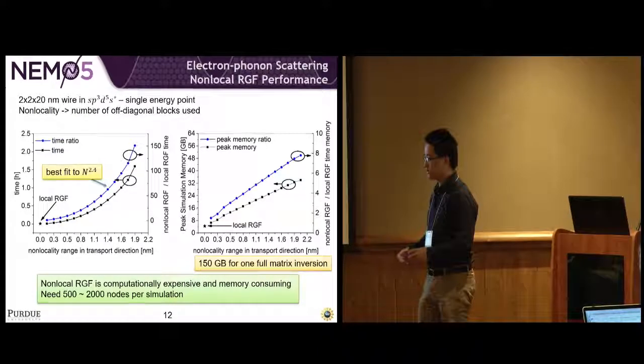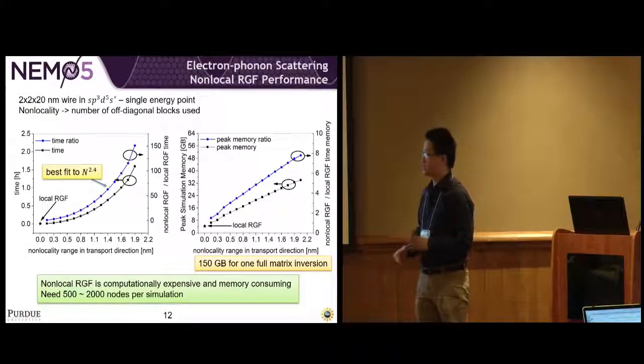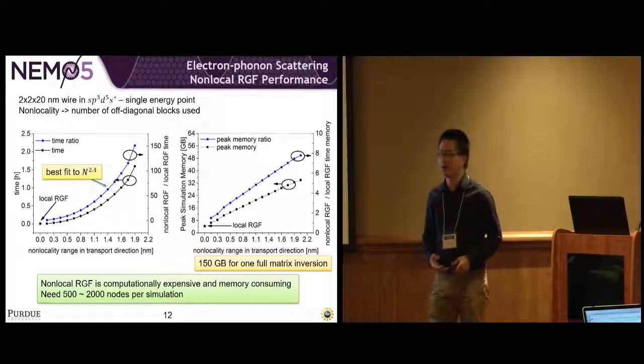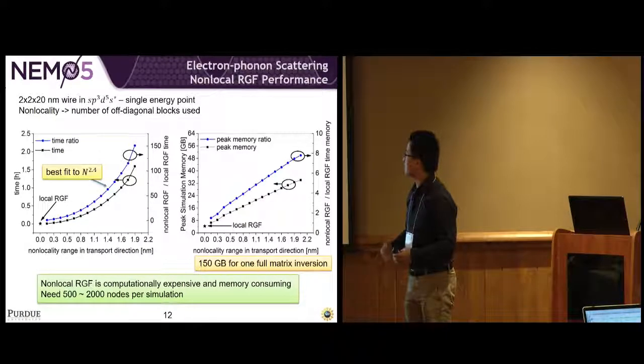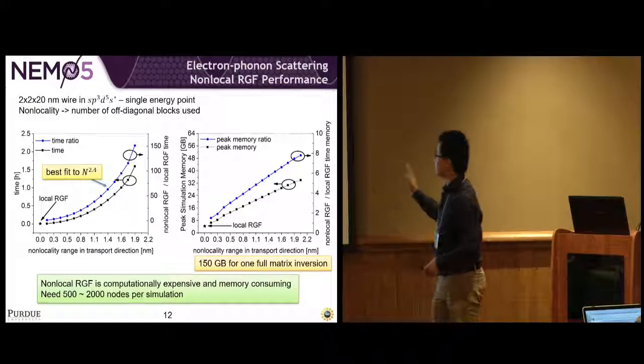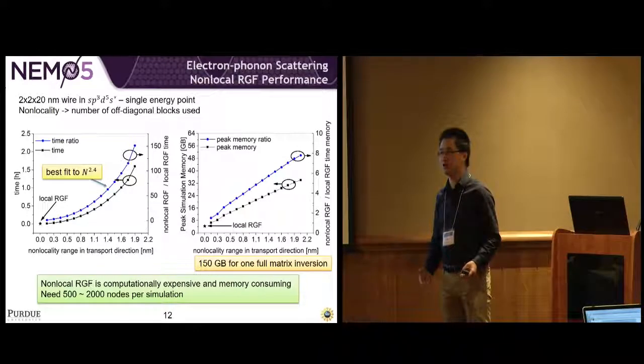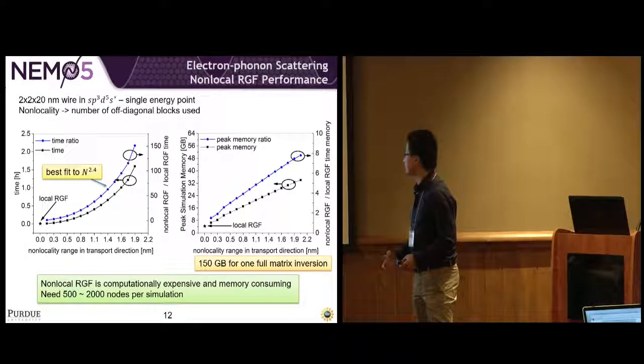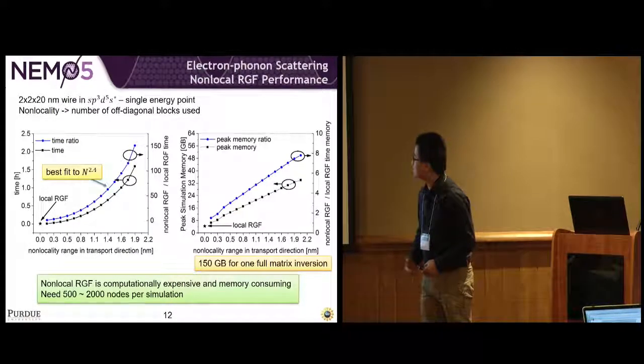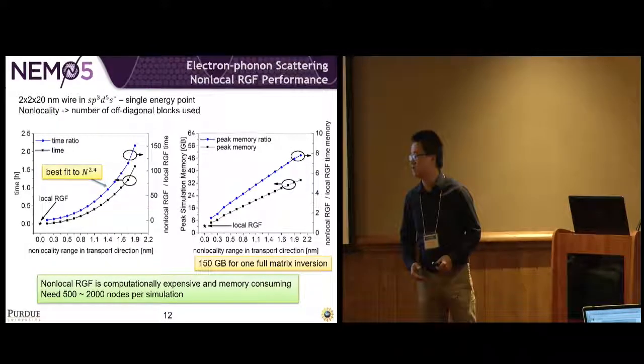Here is the computational load of this non-local RGF method. In this benchmark, we use a 2x2x20 nanometer nanowire with one single energy point as an example. The computational complexity is about n to the 2.4. The red figure shows the peak memory usage. Compared with full inversion requiring 150 gigabyte memory for this case, non-local RGF only uses 32 gigabytes. Still computationally expensive and memory consuming. In a typical simulation, we use 500 to 2,000 nodes on Blue Waters.